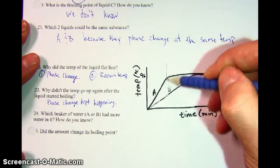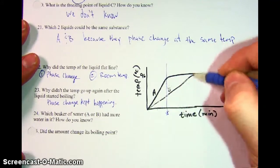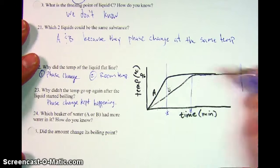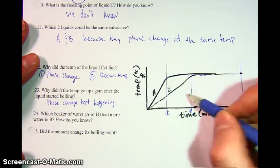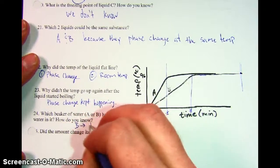Looks like A started boiling, or flattened out at this time, and B flattened out much later. So B must have more water in it because it took a lot longer for it to boil. So B took longer to boil.